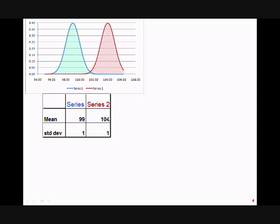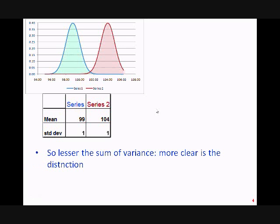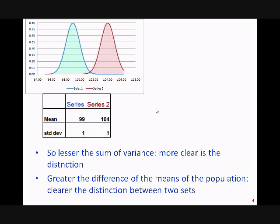You can see the overlap area has reduced even further. So in a nutshell: the lesser the sum of variances, the clearer the distinction; and the greater the difference between the means of the two groups, the clearer the distinction between the two sets. That's the rationale behind Fisher's ratio.